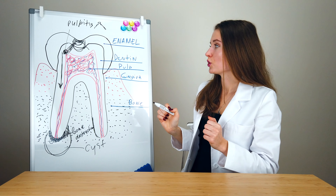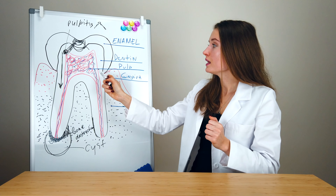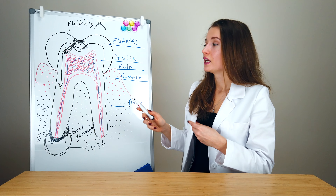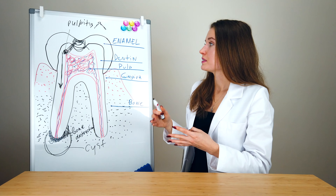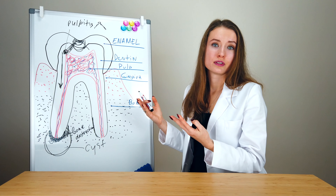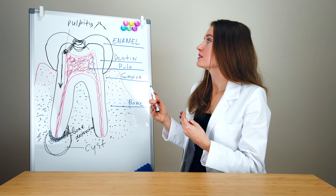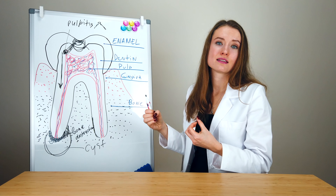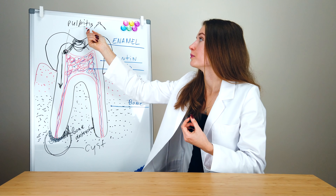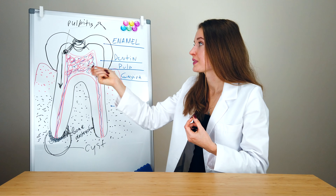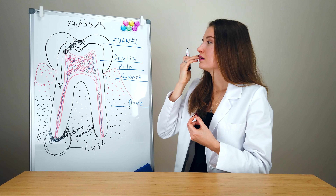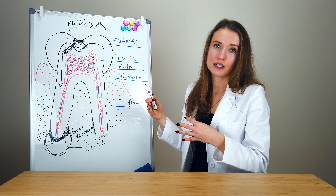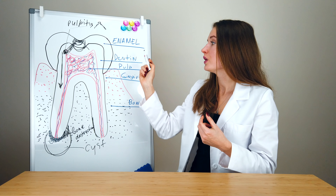The doctor cannot distinguish the deepness of this carious process, because usually it starts from a very narrow hole, and when it spreads down it becomes wider. To distinguish the deepness of this carious process, we have to take an x-ray.